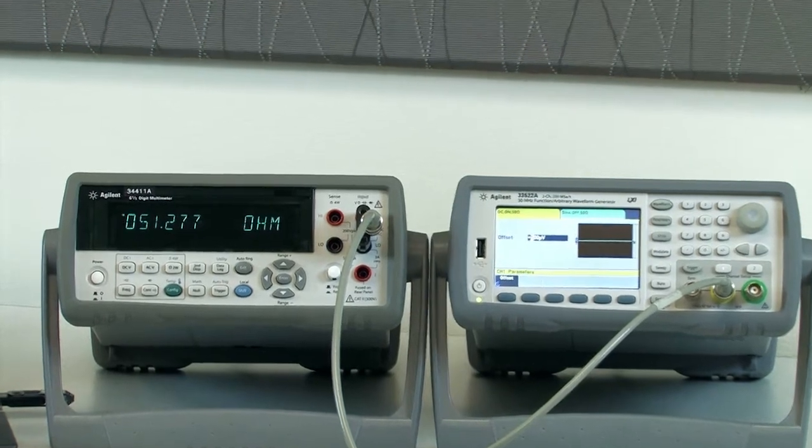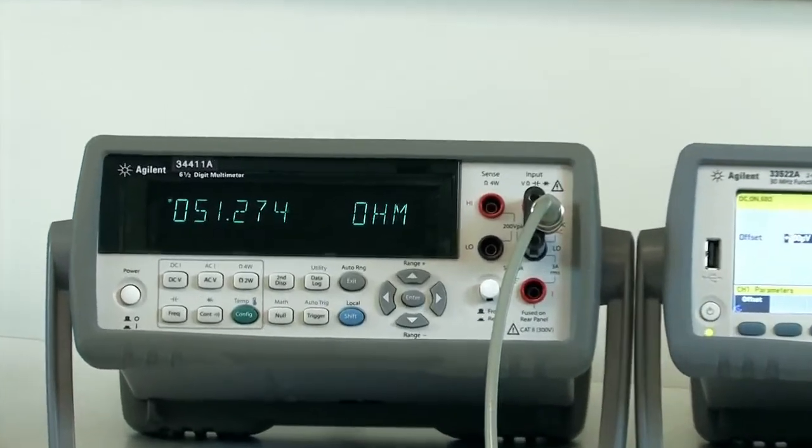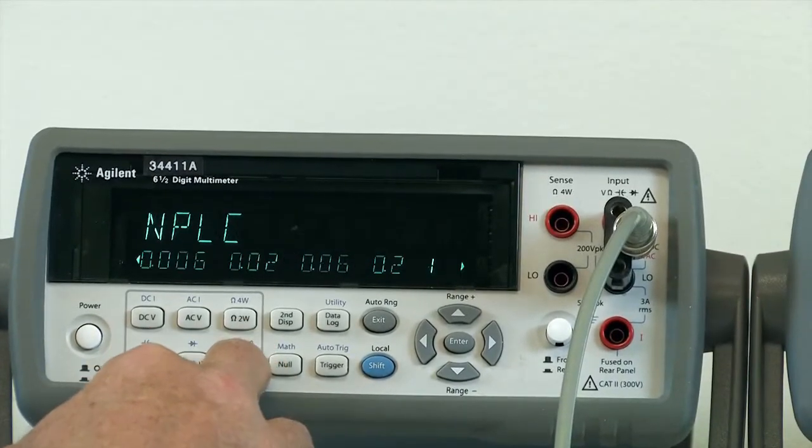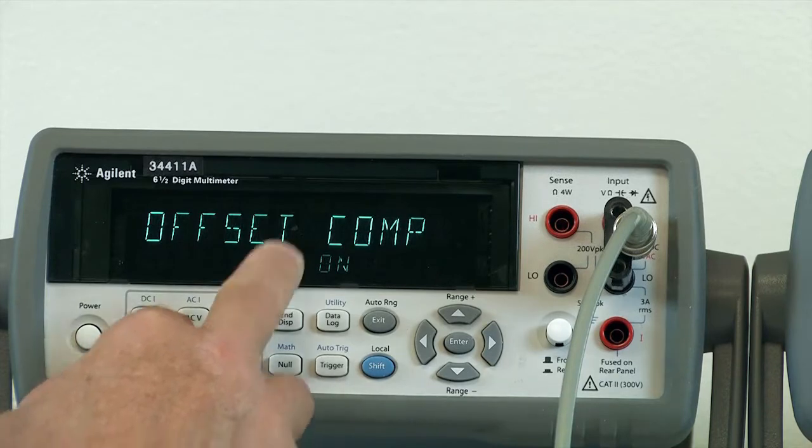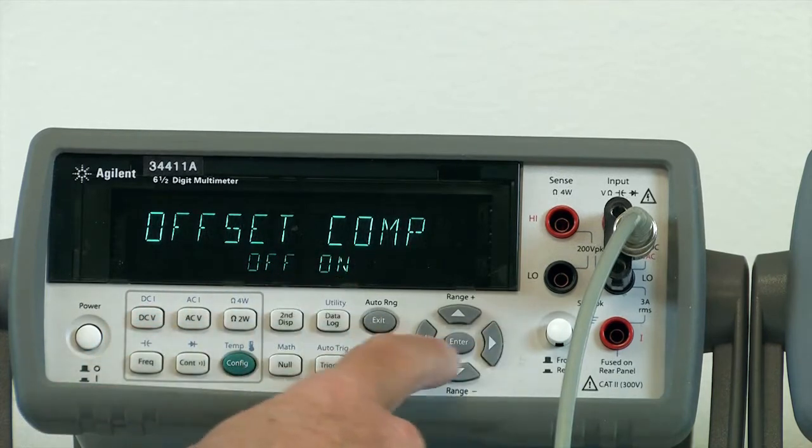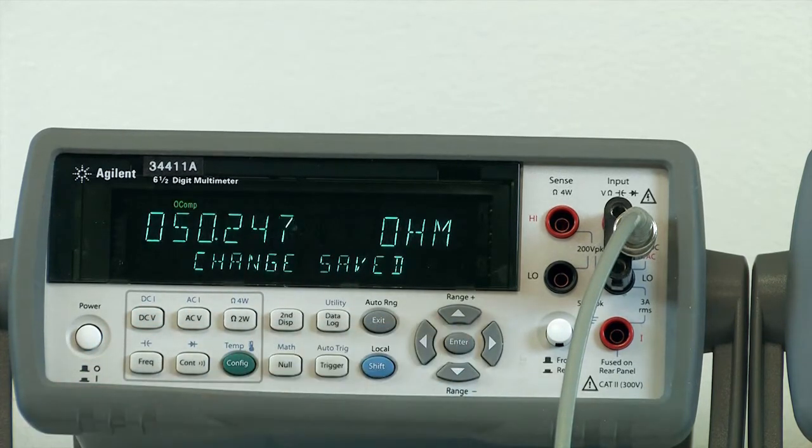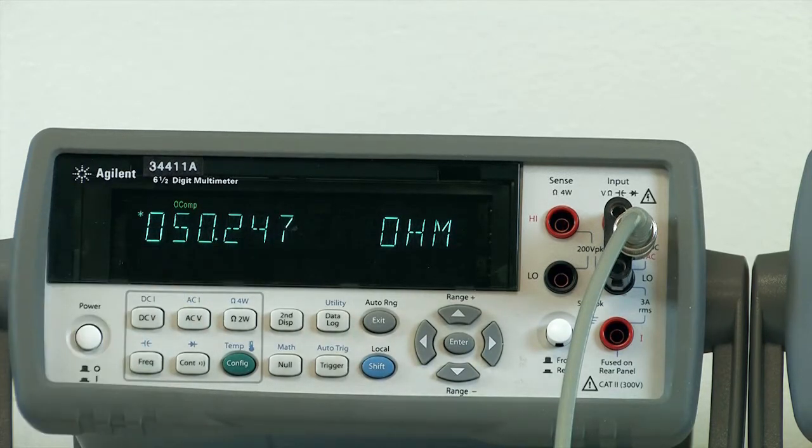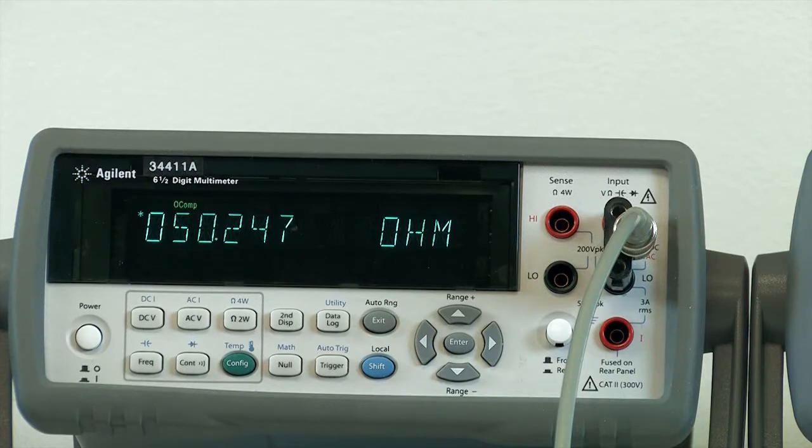Now when I turn on offset compensated ohms, the digital multimeter will compensate for that stray voltage. We go to offset compensation, turn it on, and now we see the little OCOMP indicator is on, and we see it's measuring again 50.2 ohms, just about the right measurement.